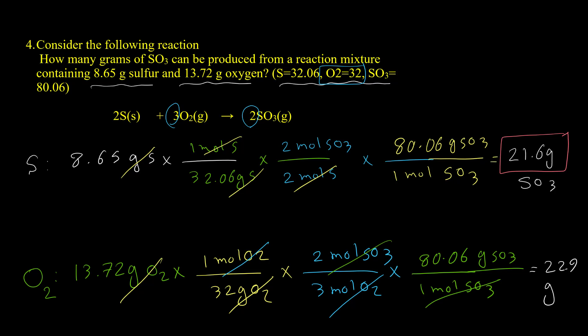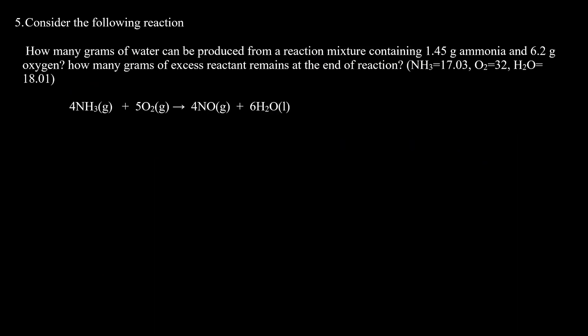In question 5, we want to calculate both the value for the product and the amount of remaining excess reactant. The reaction involves ammonia and oxygen. The question asks: how many grams of water can be produced from 1.45 grams of ammonia and 6.2 grams of oxygen, and how many grams of excess reactant remain at the end of the reaction?